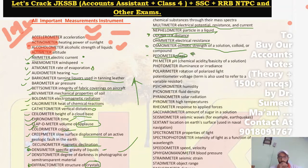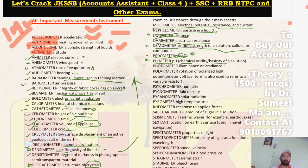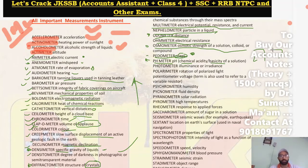Next, Pedometer is used to measure steps. You may have it on your phone as well — Pedometer is used when you go for a walk. Next, pH Meter measures pH, which is basically the chemical activity or the power of hydrogen. Less than 7 is acidic, greater than 7 is basic, and equal to 7 is neutral. Next, Photometer measures luminance or irradiance.